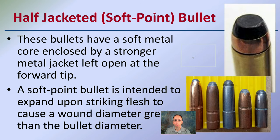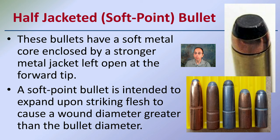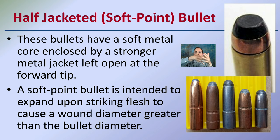Half-jacketed or soft-point bullets — you can see here the entire projectile isn't encased; the tip has exposed soft material, in this case what looks like lead. A half-jacketed or soft-point bullet has a soft material core enclosed with a stronger metal jacket, but left open towards the tip. That soft-point bullet is intended to expand upon striking flesh, causing a wound of greater diameter than the bullet diameter, because the softer material tends to spread out on impact.